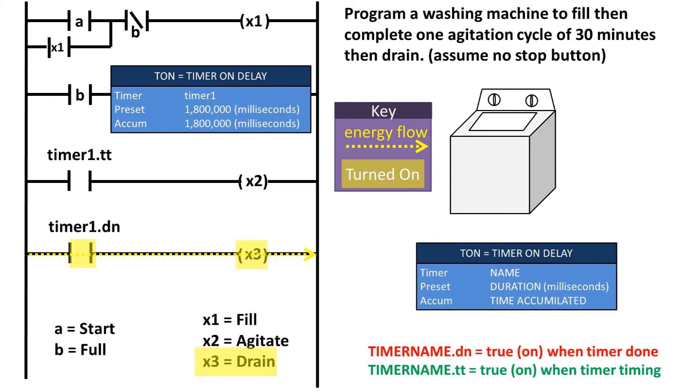On our final rung we have a timer1.dn which is on or true when the timer is done. So this will initiate the drain cycle when the timer is done.